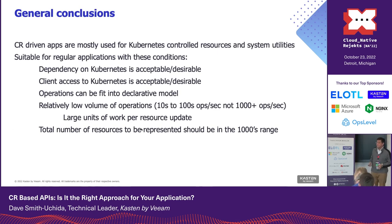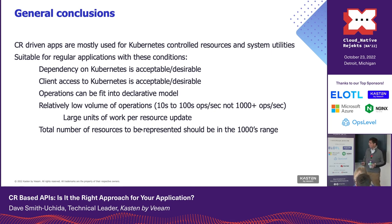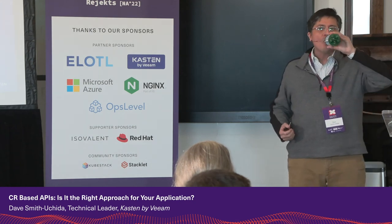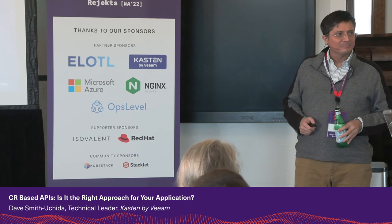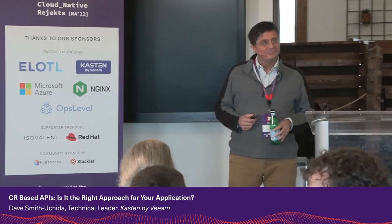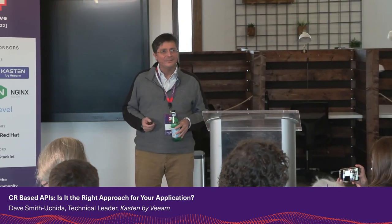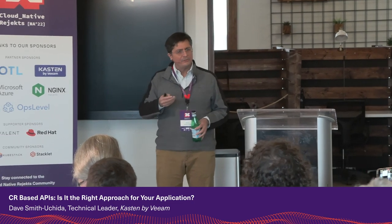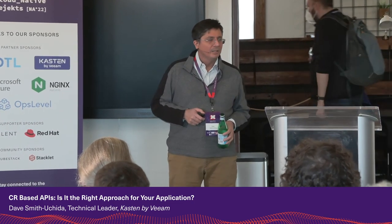Conclusions: right now these are mostly used for Kubernetes resources and system utilities. If you're considering building a custom resource-based application, the conditions to look at are: is your dependency on Kubernetes acceptable? Is client access to Kubernetes acceptable? Can you fit your operations into the declarative model? Do you have relatively low volume of operations with large units of work per resource update? And should your total number of resources be relatively small? Question from Ben: can you apply RBAC controls to aggregated API objects? I believe so — the API server should do that for you.